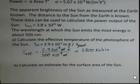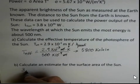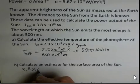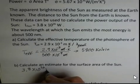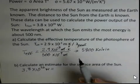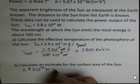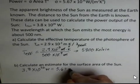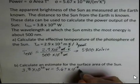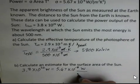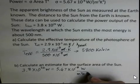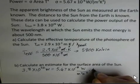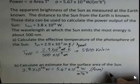Our power, that was given in the problem, 3.8 times 10 to the 26 watts. The constant, the sigma, is Stefan's constant, 5.67 times 10 to the minus 8 watts per meter squared, Kelvin to the fourth power. And then the area that we're trying to find is there.